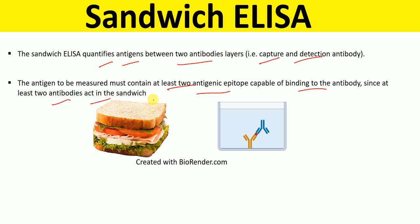Let's talk about why Sandwich ELISA is called Sandwich ELISA. As you can see in this picture, this is an example of a typical sandwich, where we have two pieces of bread and in between there is the filling. Similarly, in Sandwich ELISA, we have one antibody that is called the capture antibody.